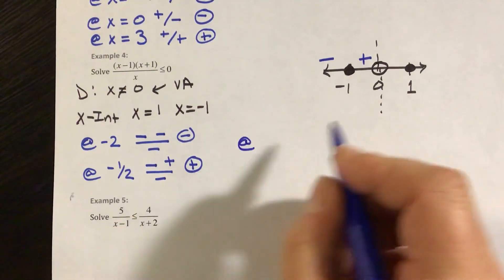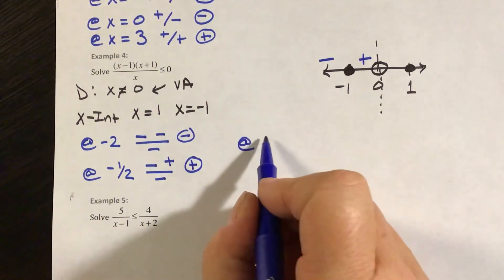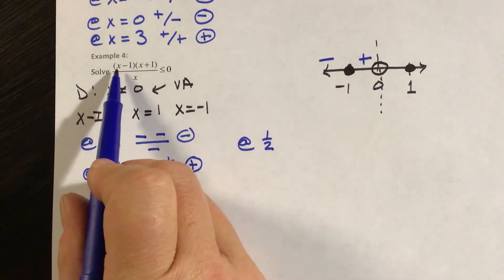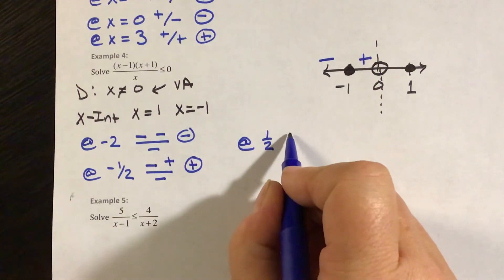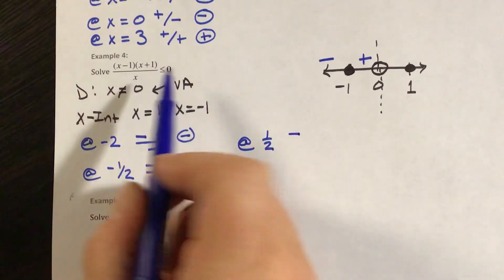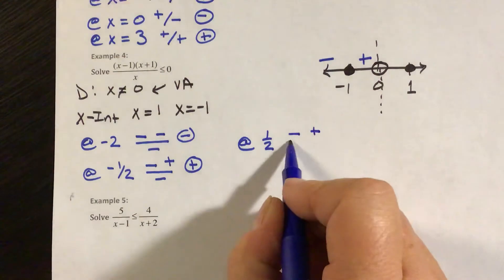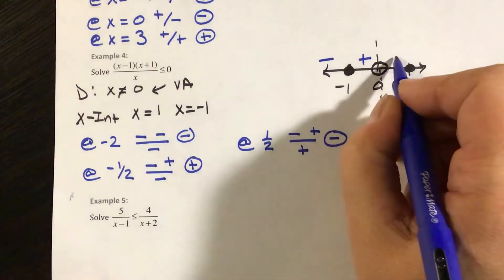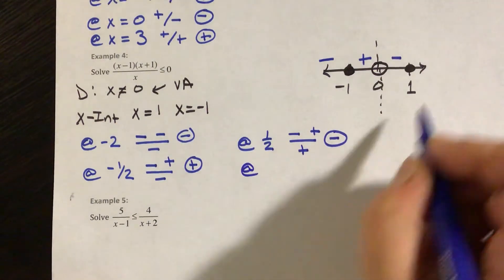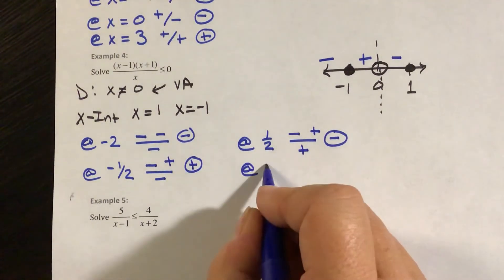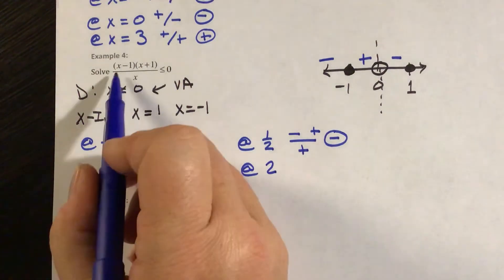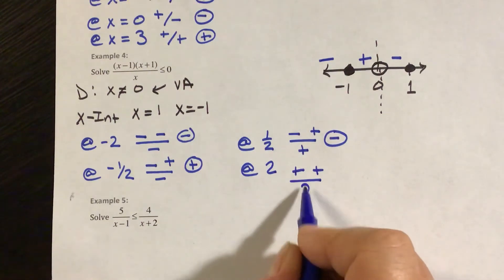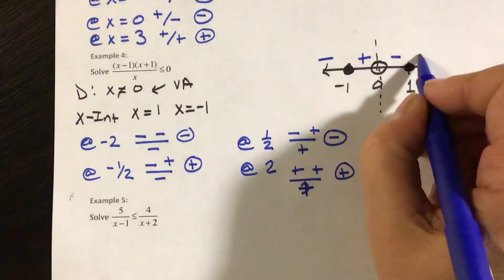At x equals positive one-half: one-half minus 1 is negative one-half; one-half plus 1 is positive three-halves; positive one-half on the bottom — one negative, so this section is negative. For a number bigger than 1, at x equals 2: 2 minus 1 is positive; 2 plus 1 is positive; 2 is positive — all positive, so this region is positive.